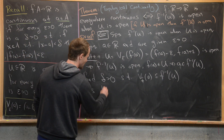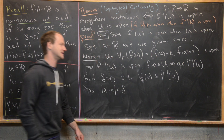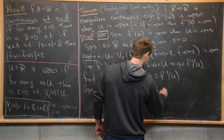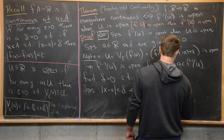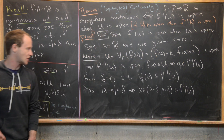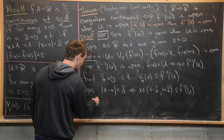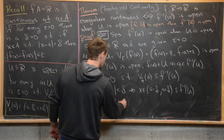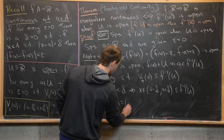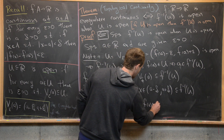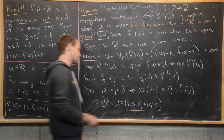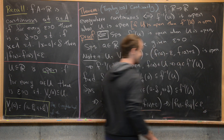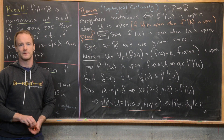Now we show this delta corresponds to the given epsilon for continuity at a. Suppose the absolute value of x minus a is less than delta. Rewriting in terms of open sets, x is in the interval a minus delta to a plus delta, which is a subset of f inverse of U. Evaluating at f(x), we see that f(x) is in U, and U equals the epsilon neighborhood centered at f(a) — the interval f(a) minus epsilon to f(a) plus epsilon. As an inequality, the absolute value of f(x) minus f(a) is less than epsilon, which is exactly where we needed to end to prove the reverse direction. And that's a good place to stop.